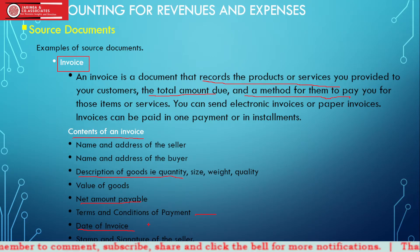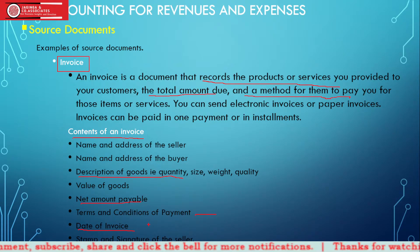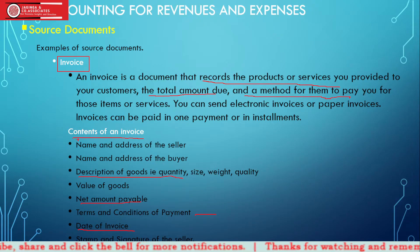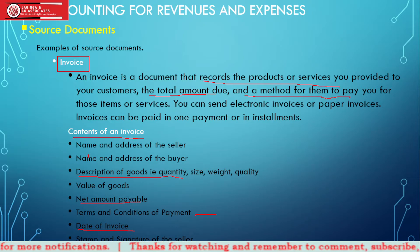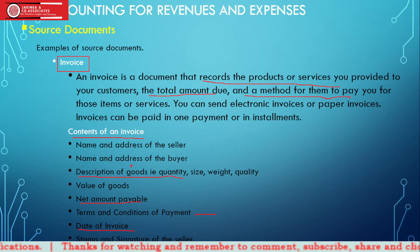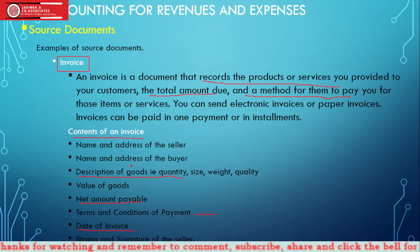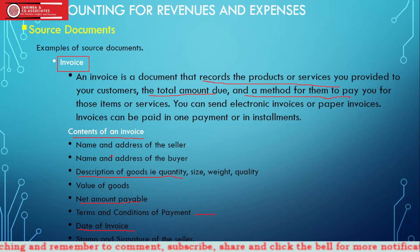And lastly, the invoice must have the stamp and signature of the seller. Of course there are quite a few details about an invoice. This is where we are talking about invoice within a geographical region. If you are talking about an invoice from a different country, we would be talking about shipping details and the bill of lading. This one is just a local and regional invoice.